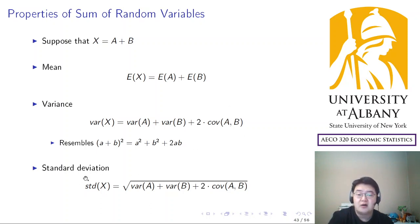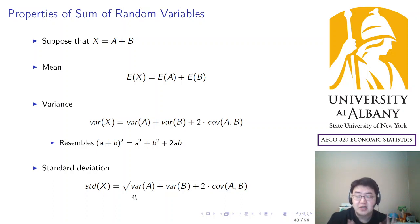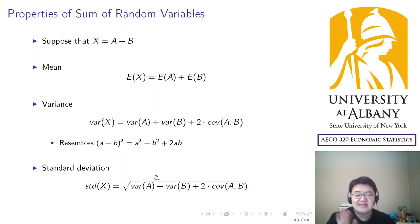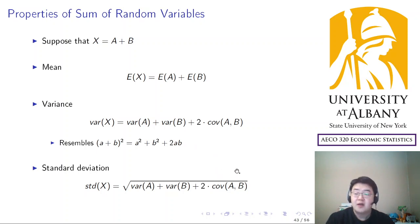Standard deviation follows from the variance formula by taking the square root. Standard deviation is the more common measure of risk, though it's less convenient because we have to carry the square root throughout calculations. We'll be using this formula going forward. I'll stop the video here and we'll continue from this property — thank you.